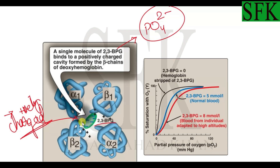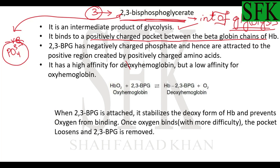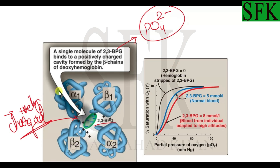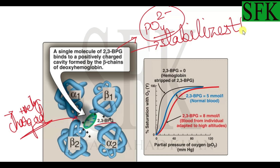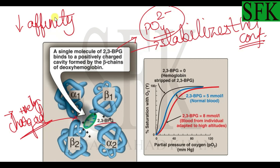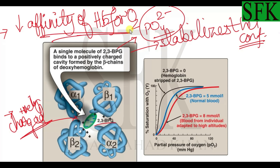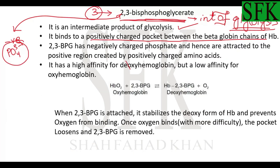After 2,3-BPG binds to the beta chains in this positively charged pocket, if oxygen is bonded to any of the four heme groups, that oxygen is removed. This is because 2,3-BPG stabilizes the T-conformation of hemoglobin — it reduces the affinity of hemoglobin for oxygen. Once 2,3-BPG is attached, oxygen can no longer bind, and the deoxygenated hemoglobin containing 2,3-BPG has a very low affinity for oxygen and cannot easily accept oxygen back.